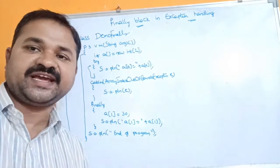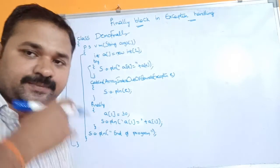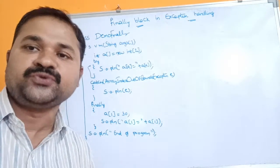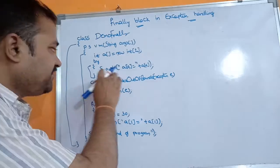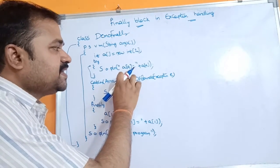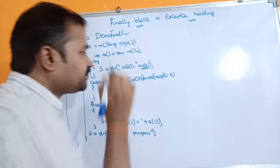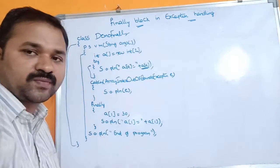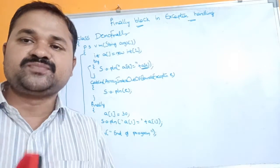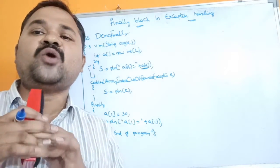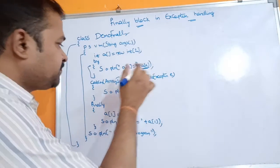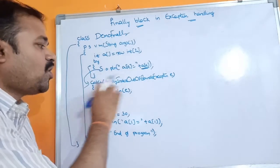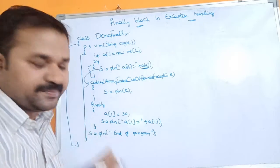The try block contains a list of statements that may generate an exception. If there is an exception in the try block, the throw keyword throws that exception object to the corresponding catch block. Here we have the statement System.out.println(a[4]), but memory is allocated for only two elements. We are trying to access a[4], so the throw keyword throws an ArrayIndexOutOfBoundsException to the corresponding catch block.